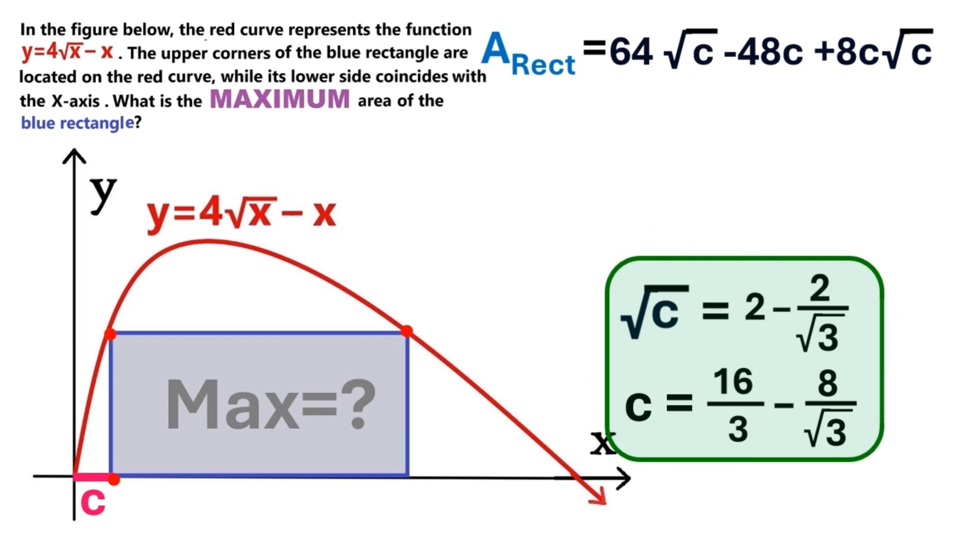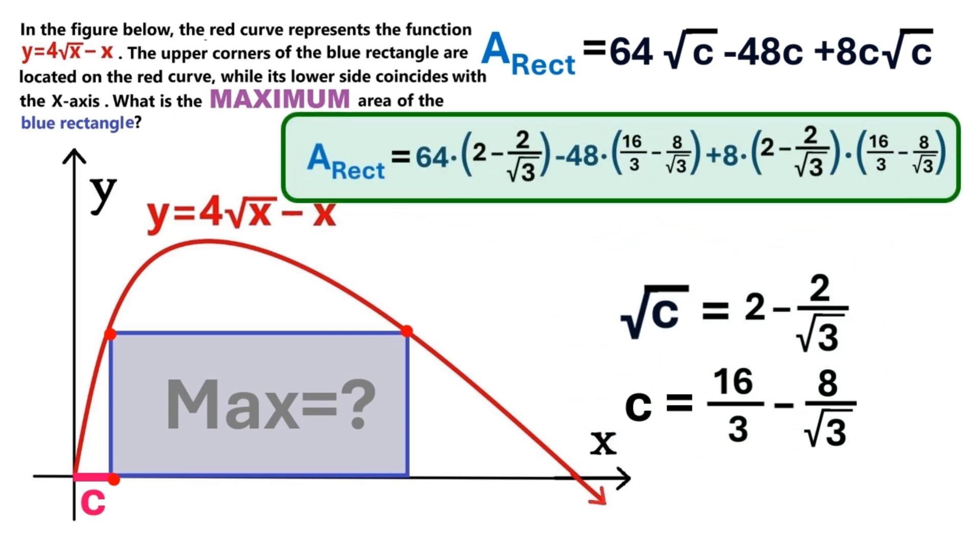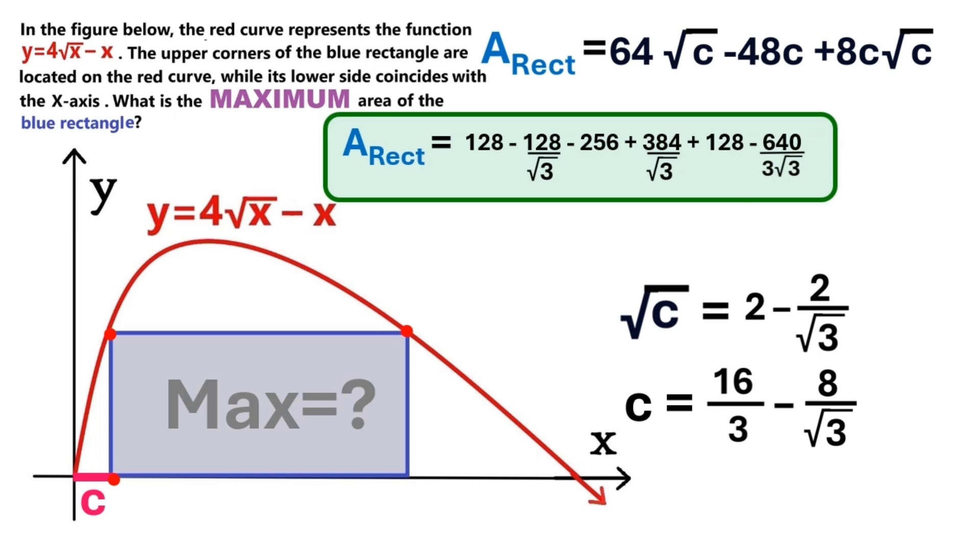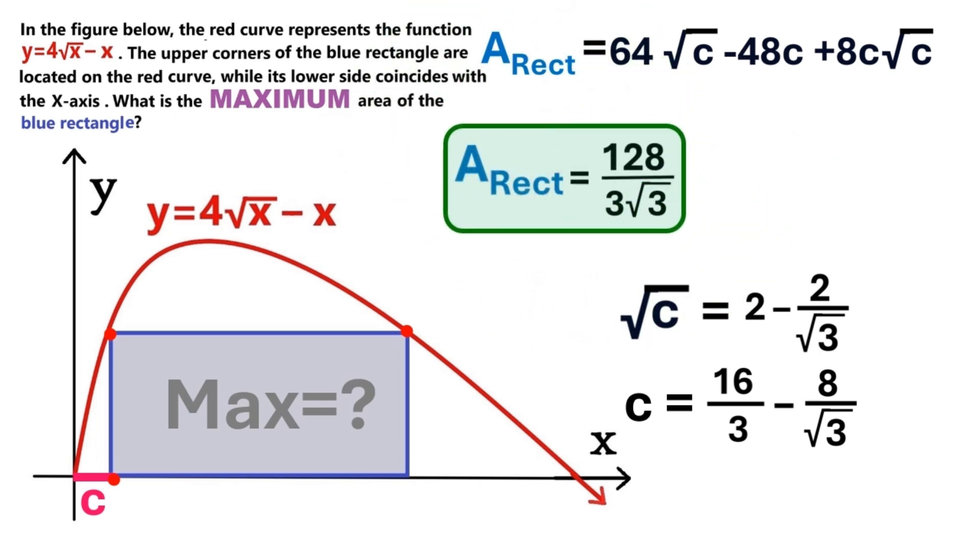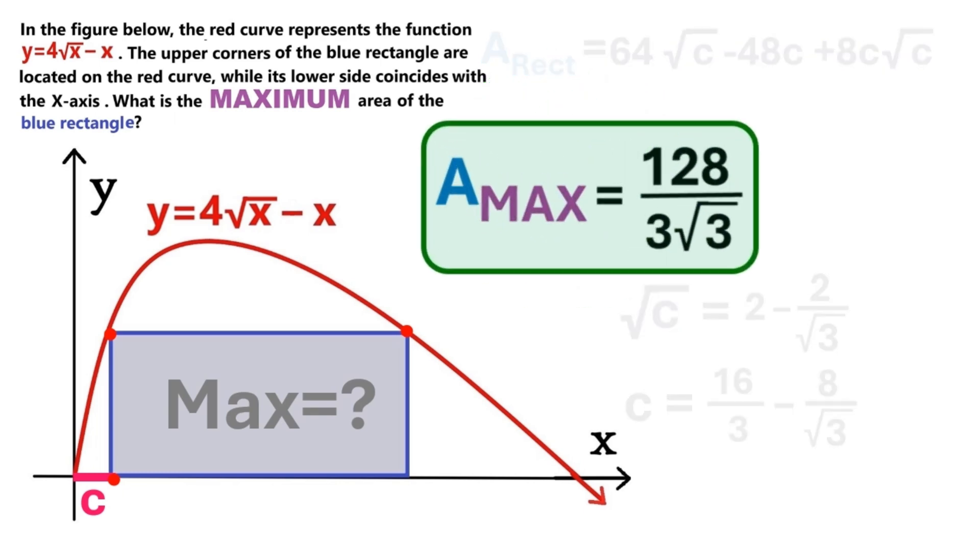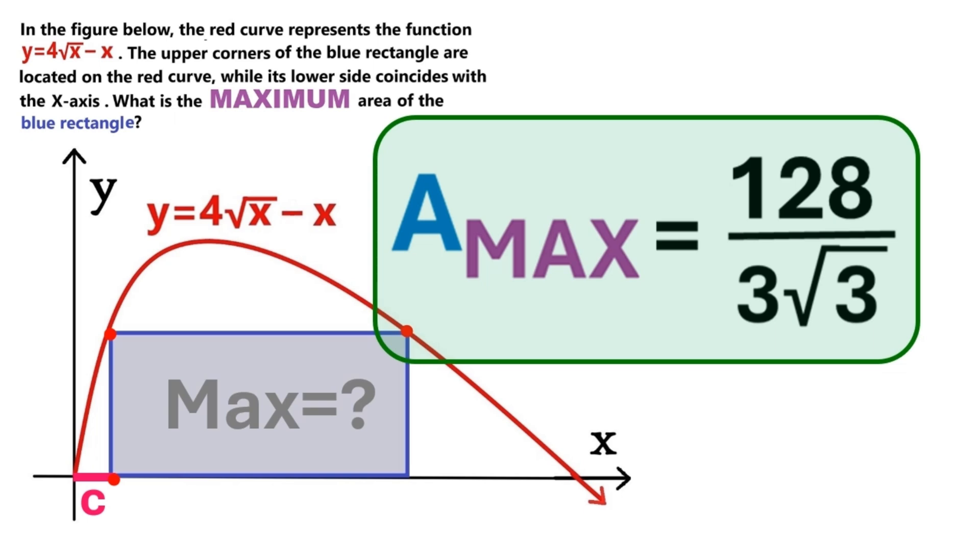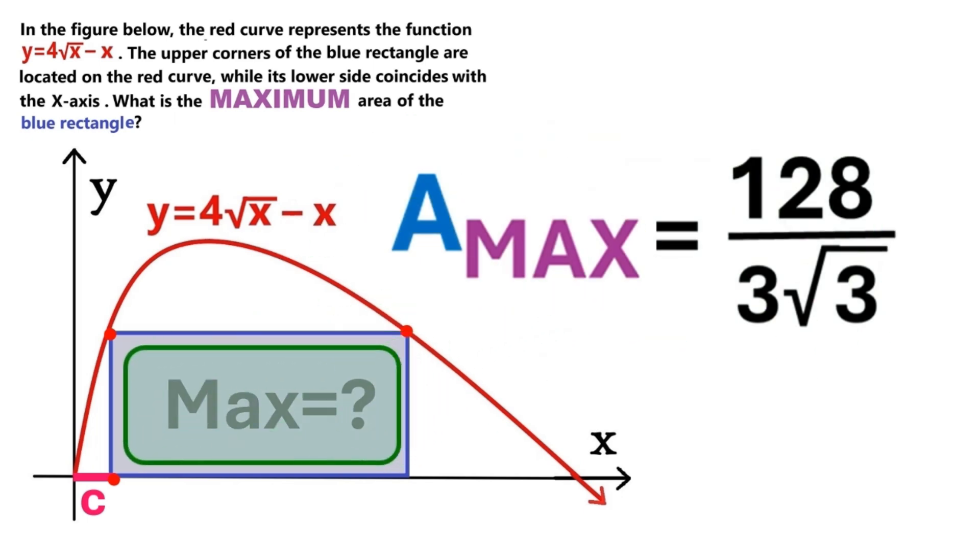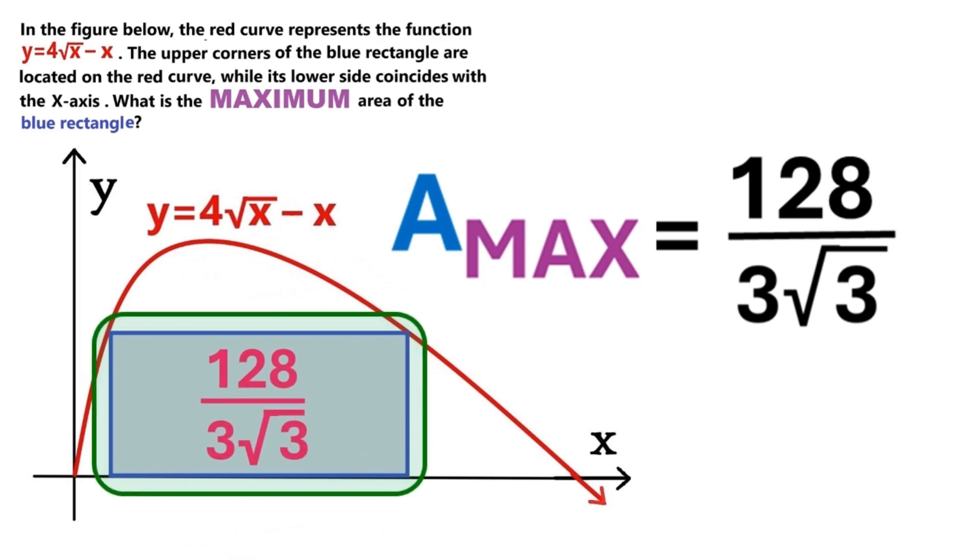And the square root of C. So now I'm going to put these values into the area formula like this. Again I'm doing the math. And we get 128 over 3 times the square root of 3. Which is the maximum possible area the blue rectangle can attain. And there we are people. We found the maximum area of the blue rectangle. And it's 128 over 3 times root 3.